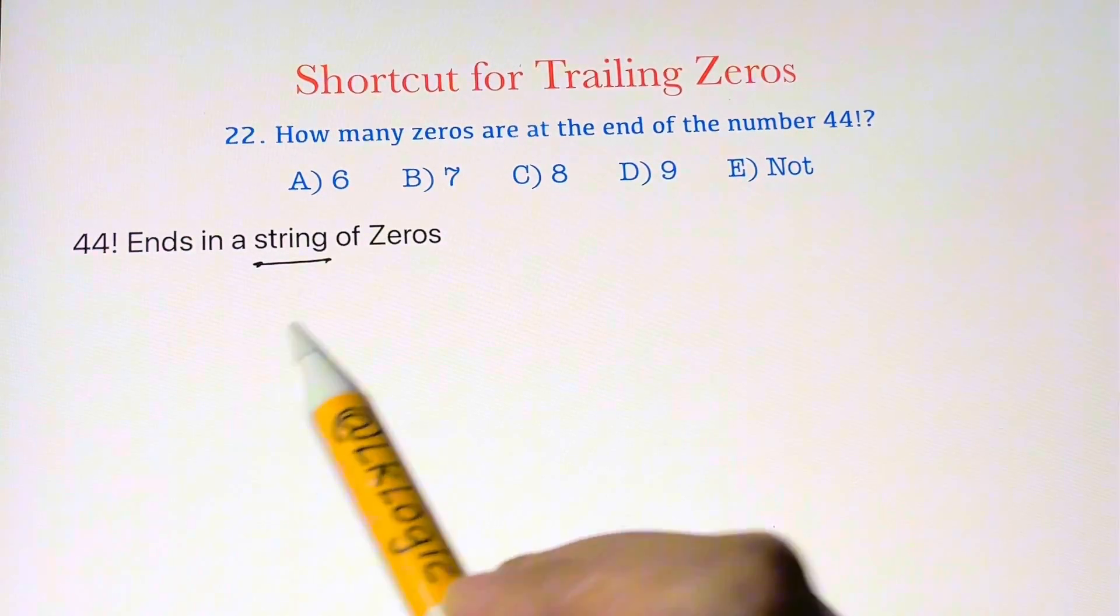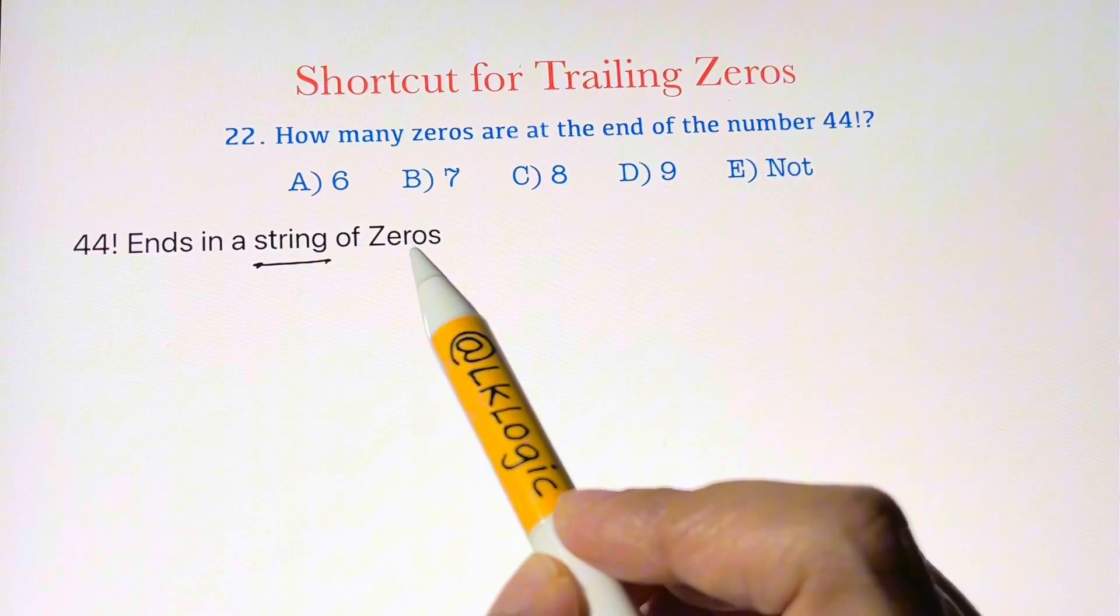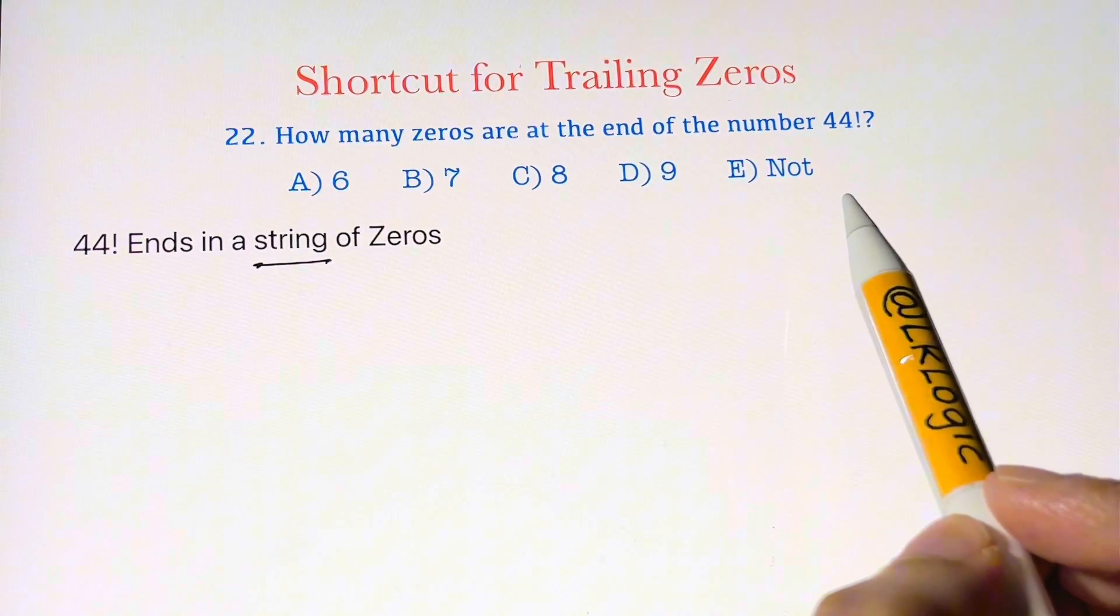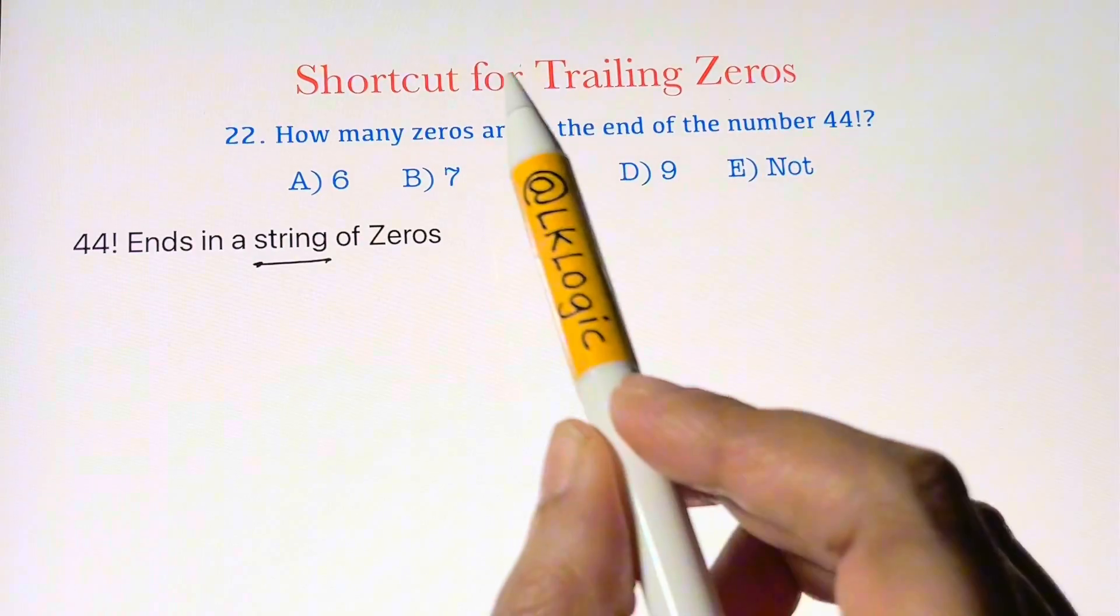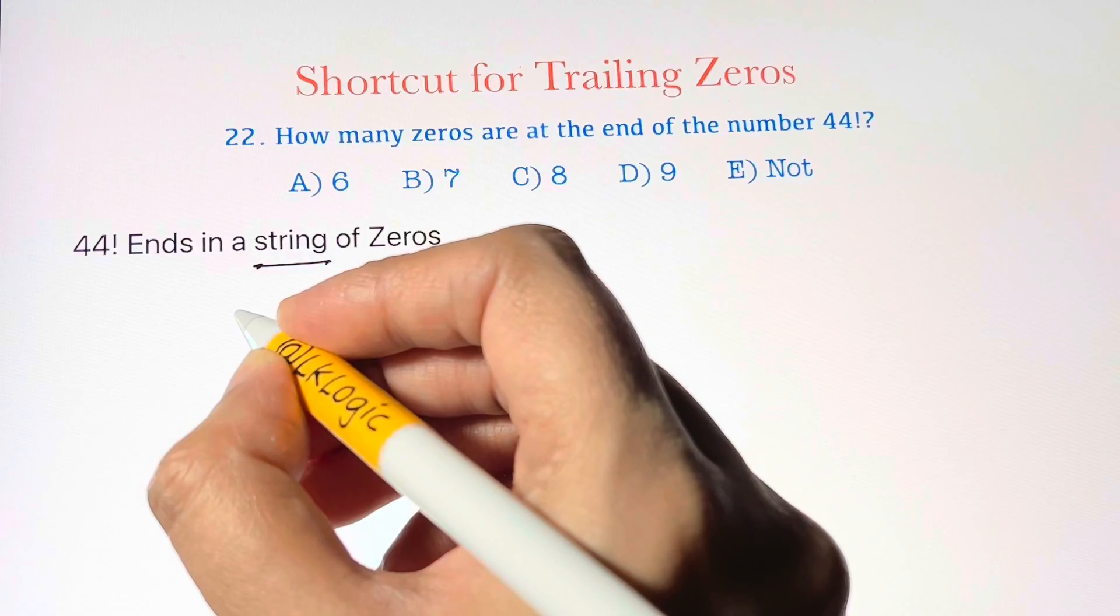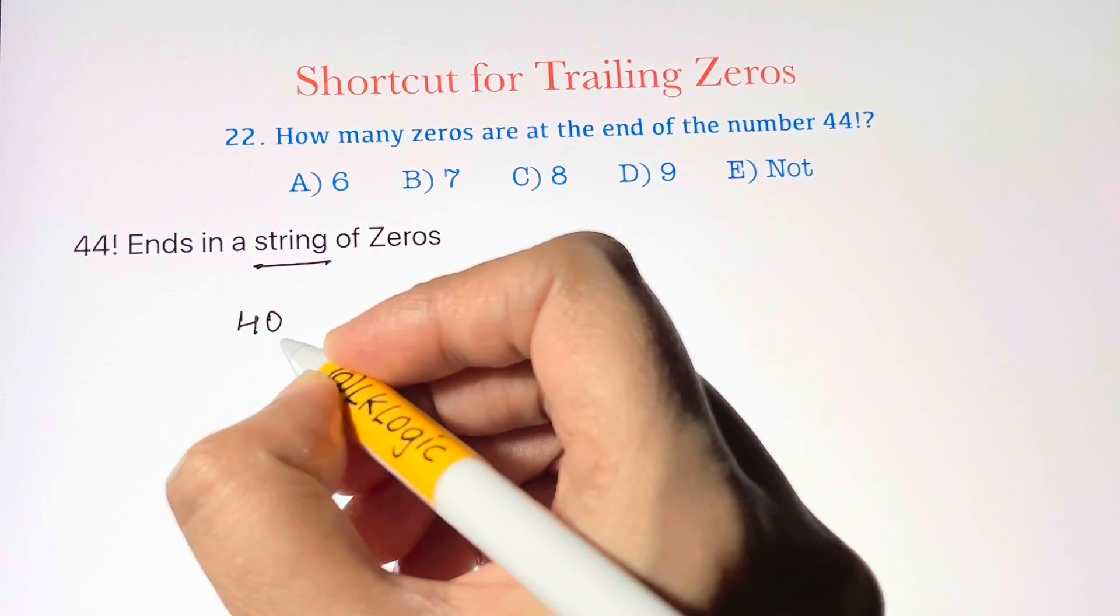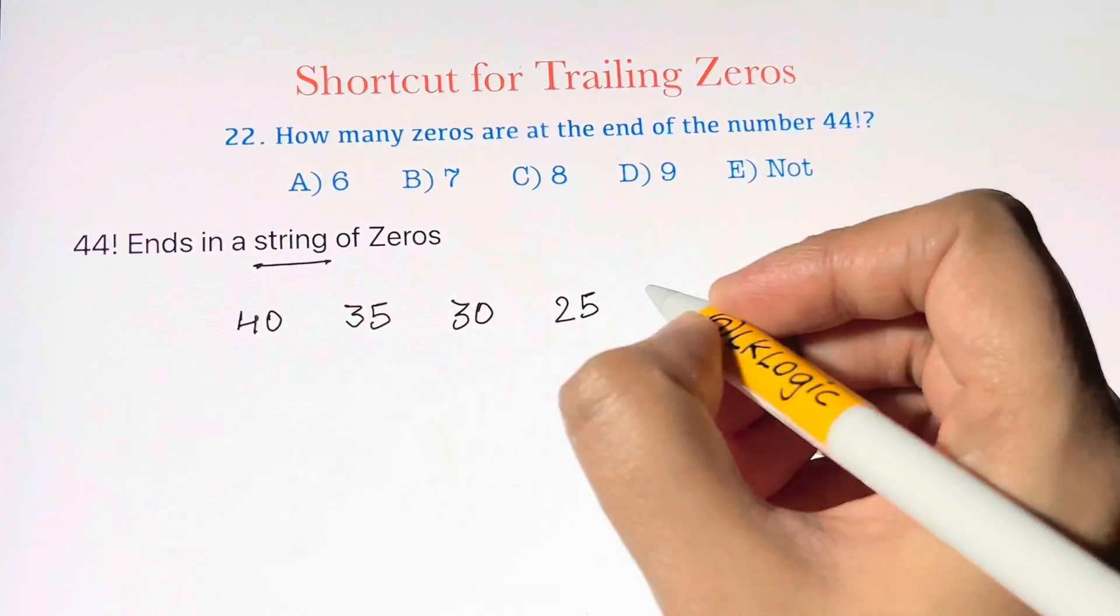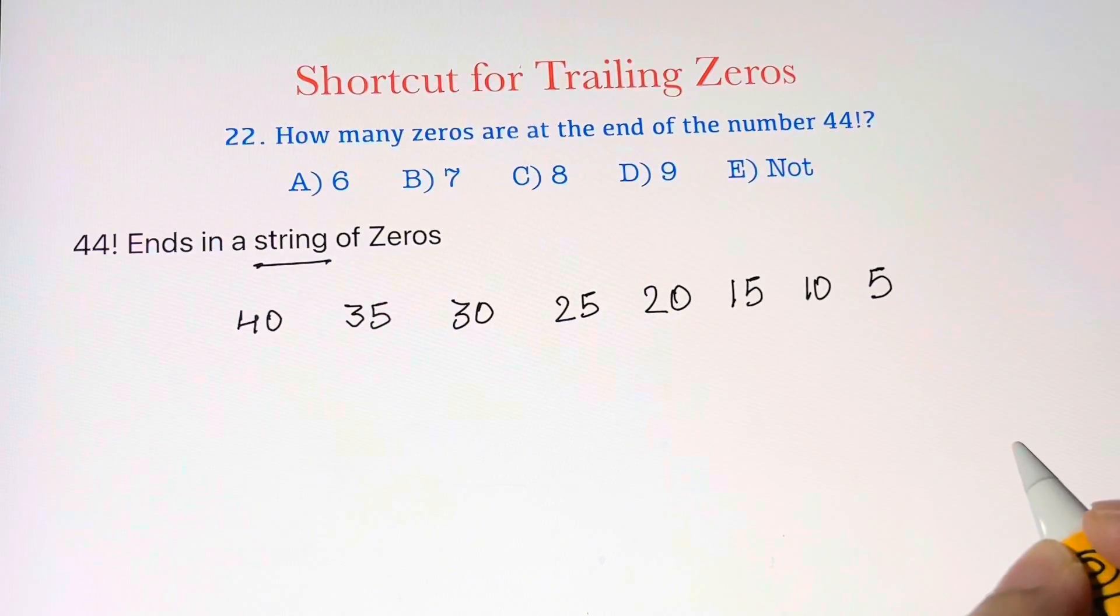How many zeros are in the string? I'm going to show you the old way and then develop a shortcut, so it will be helpful in all problems of this kind. So the old way for 44 factorial, let's just write all the factors of 5: 40 will be the first one, then 35, 30, 25, 20, 15, 10, 5.